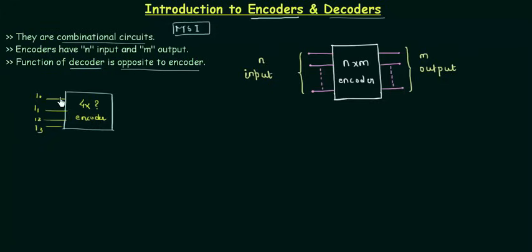Now a very important thing that I am going to tell you for these encoders is that it is used to minimize the number of data lines. For example, if I say out of these 4 inputs, a single input is high all the time. Either I0 is high, I1 is high, I2 is high, or I3 is high.